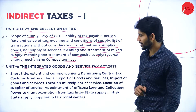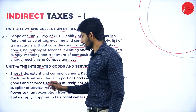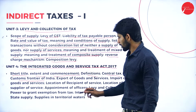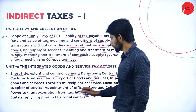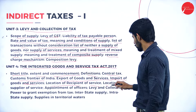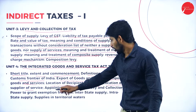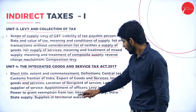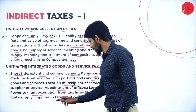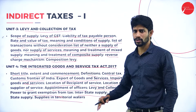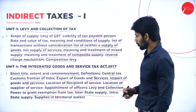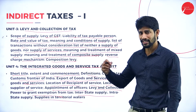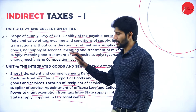Unit number four covers the Integrated Goods and Service Tax Act 2017, the IGST Act 2017. Topics include: short title, extent and commencement, definitions, central tax, customs frontier of India, export and import of goods and services, location of recipient of services, location of supplier of services, appointment of officers, levy and collection, power to grant exemption from tax, interstate supply, intrastate supply, and supplies in territorial waters.